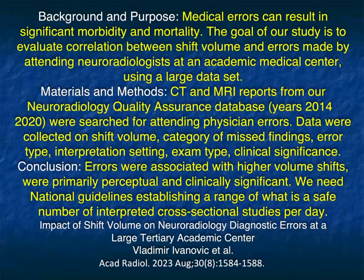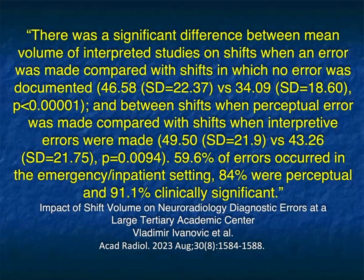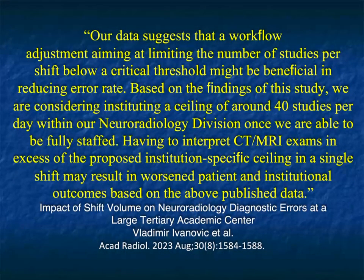In this article by Ivanovich, they looked at neuroradiology error rates based on shift volume and when shifts occurred. Their conclusions: errors were associated with higher volume shifts, were primarily perceptual, and clinically significant. We need national guidelines establishing a range of what is safe to read in a single day. Almost 60% of errors occurred in the ER inpatient setting, 84% were perceptual, and 91% were clinically significant — we're not talking about missing a one-centimeter Bosniak one cyst; we're talking about missing important things.